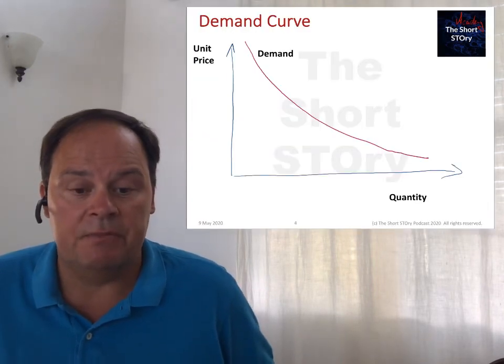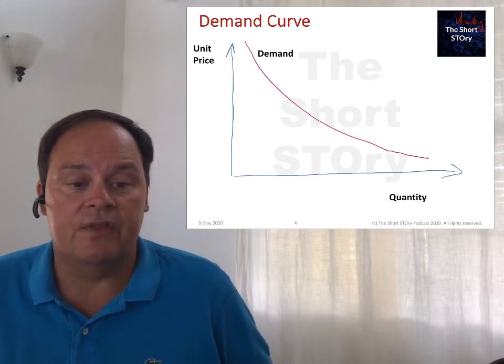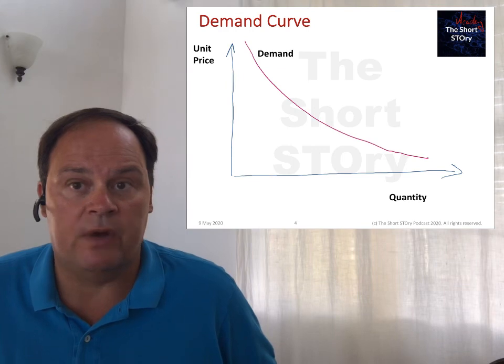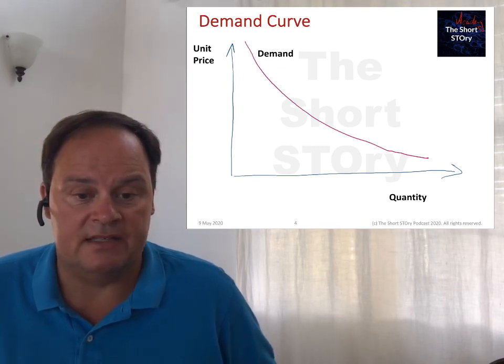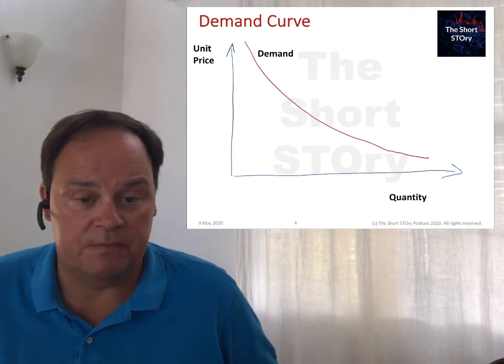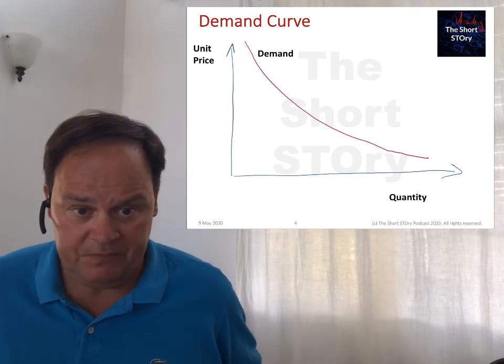The classic microeconomic supply and demand analysis starts with either the supply curve or the demand curve — we're going to start with the demand curve. The demand curve is drawn with unit price on the y-axis and quantity on the x-axis. This might be a little surprising, because one would think that quantity is a function of price, but this is just flipped.